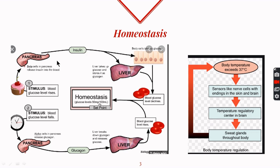If the glucose level inside the blood rises, beta cells in the pancreas secrete the hormone insulin. Insulin converts extra glucose into glycogen and stores it inside the liver, as a result maintaining the glucose level in the blood. The normal glucose level should be 90 milligrams per 100 milliliters of blood.